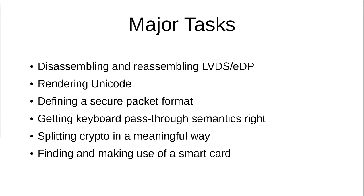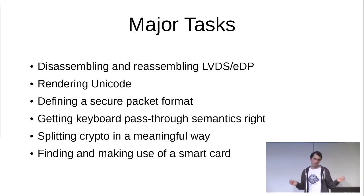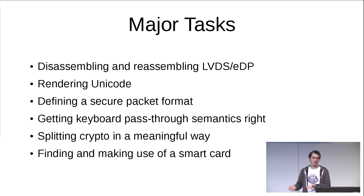We need to get the keyboard path-through semantics right so you don't accidentally input sensitive data into your host machine without noticing. We need to split and do privilege separation — crypto coprocessor versus application processor — in a sensible way that we actually gain something by it. We don't want a huge amount of code running in the crypto coprocessor. If we want to implement this with a smart card as a key store, it will probably also be hard, because as a private citizen you can't just go out, buy a smart card SDK, and write your own 4096-bit GPG key handling on the smart card.